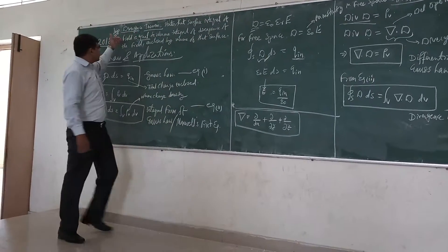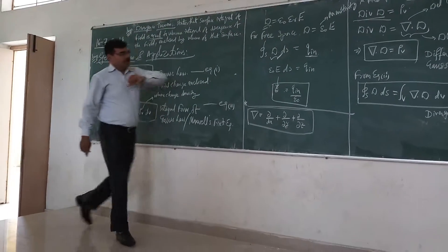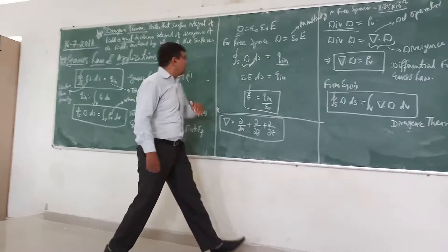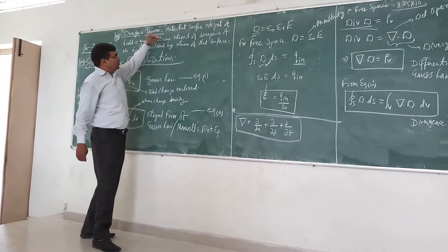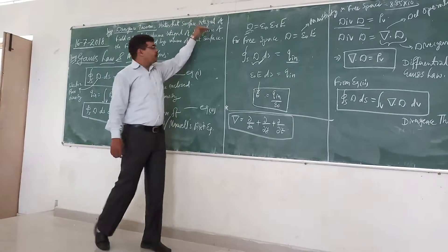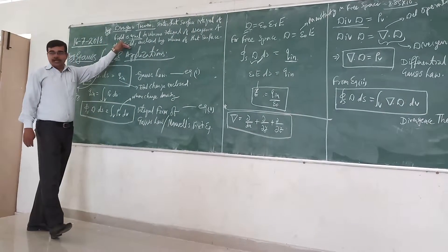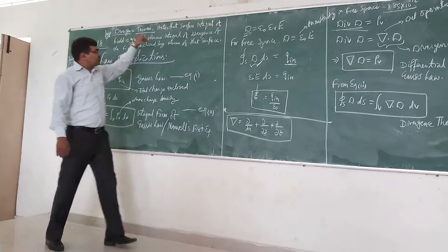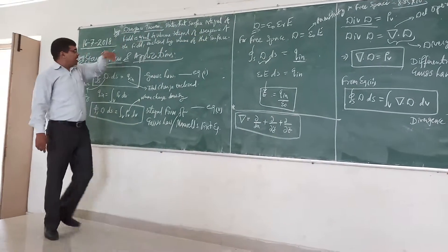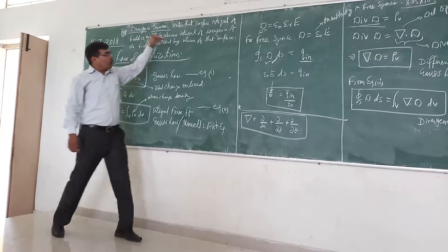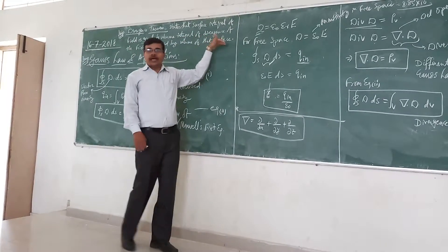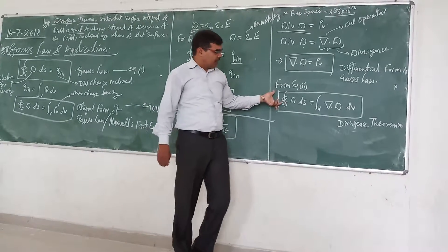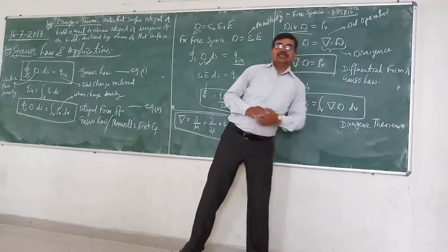The divergence theorem states that the surface integral of a field is equal to the volume integral of the divergence of the field enclosed by the volume of that surface. Mathematically, you have this equation. This is called the divergence theorem.